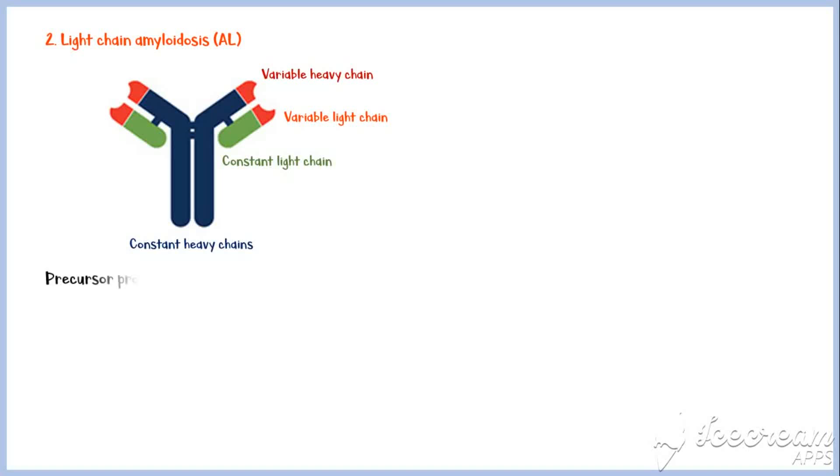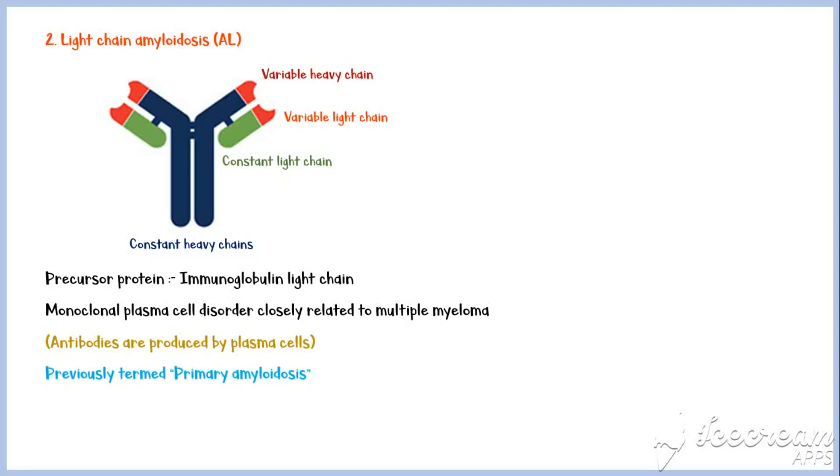The precursor protein for light chain amyloidosis is this kind of an immunoglobulin light chain, or a fragment of it. Light chain amyloidosis is a monoclonal plasma cell disorder, closely related to multiple myeloma, because antibodies are produced by the plasma cells. Light chain amyloidosis was previously termed primary amyloidosis.